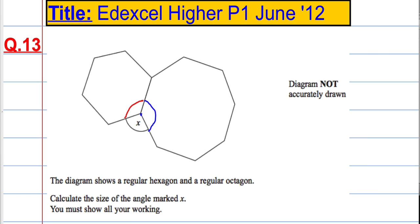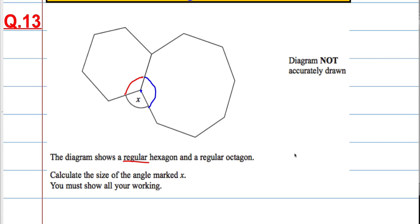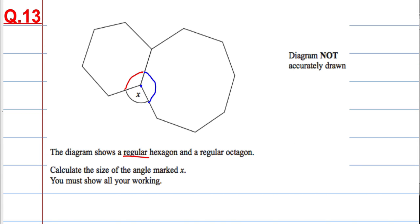Let's start by going for this red angle. Now, the important thing is it's a regular hexagon which means all the angles are the same size. So I need to know how many degrees are in the shape in total.